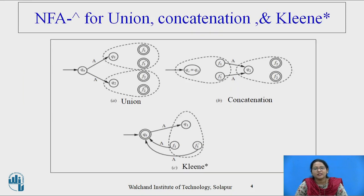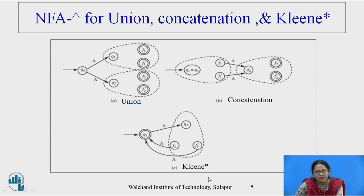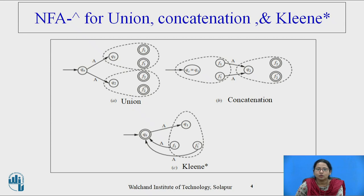How to draw NFA with a null transition? There are some rules defined by Kleene's theorem — three different rules for three types of operations. One is union, one is concatenation, and one is Kleene star. Remember: DFA, NFA, and NFA with a null transition all accept the same type of regular language. While drawing NFA with null transition, we will see each regular expression as a part of union, concatenation, or Kleene star and draw step by step, operation by operation.